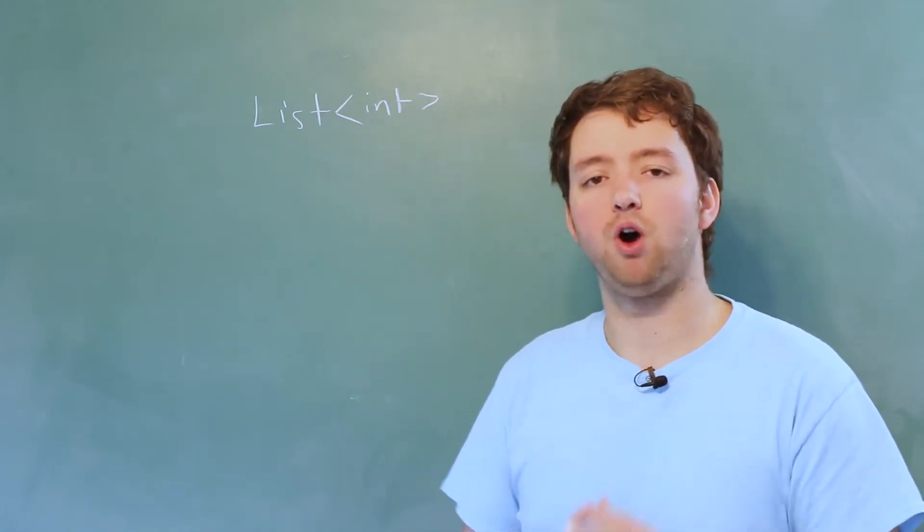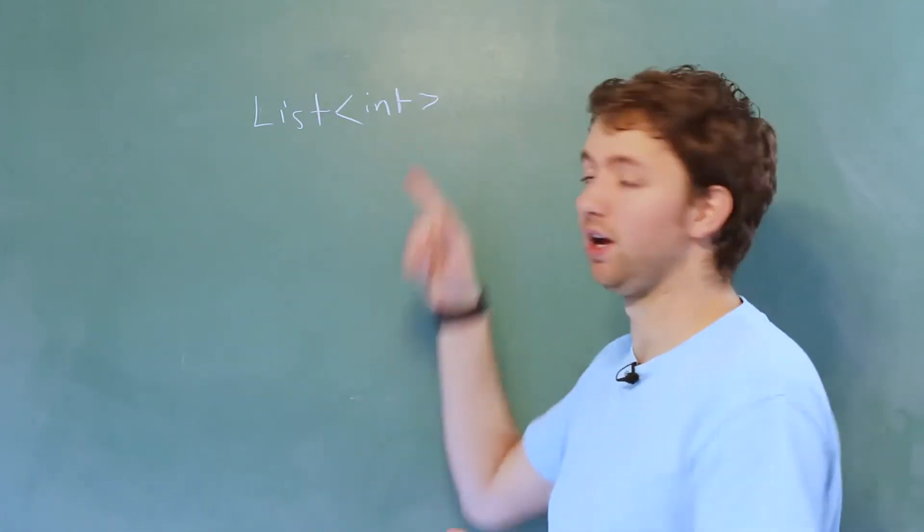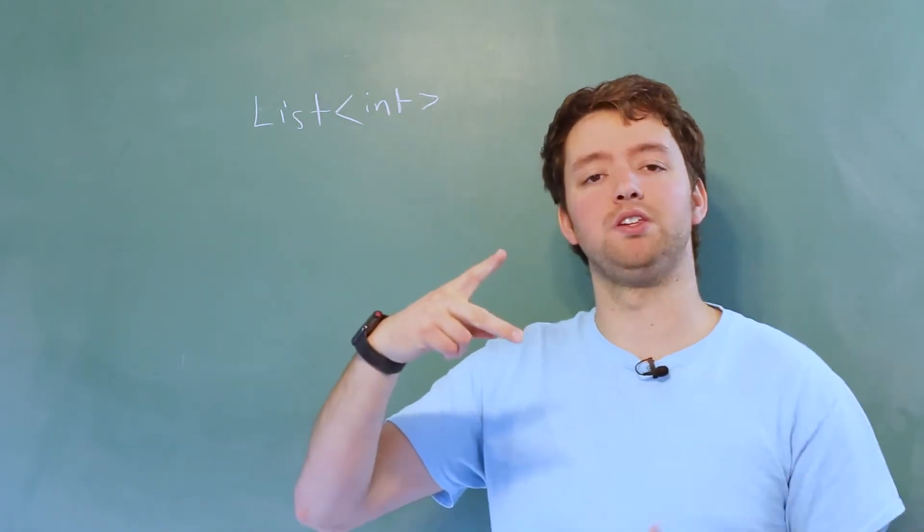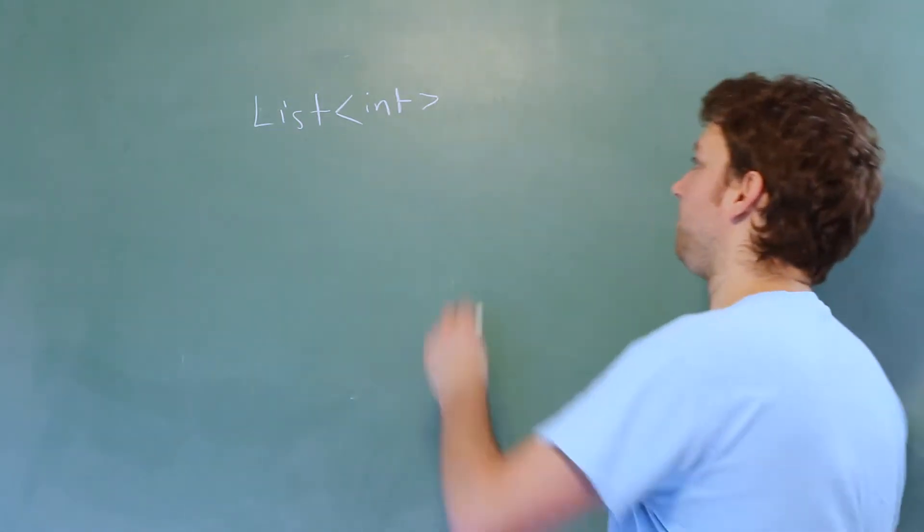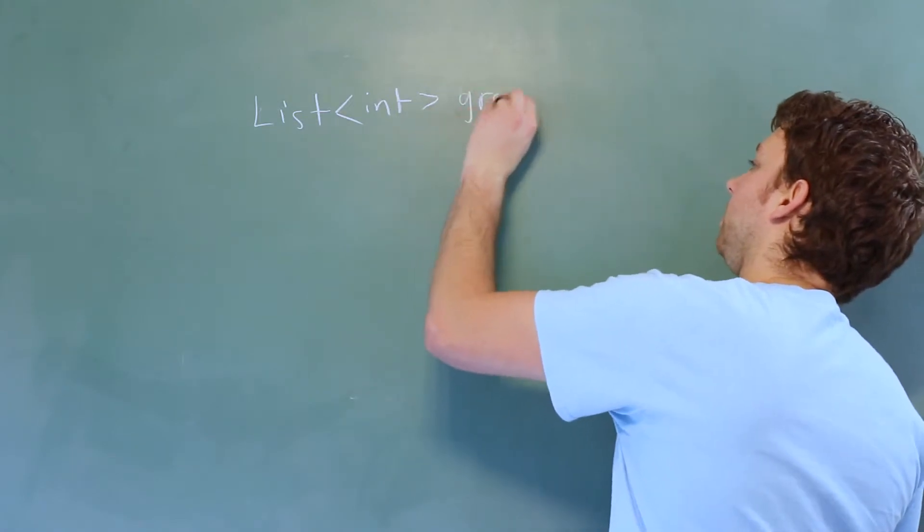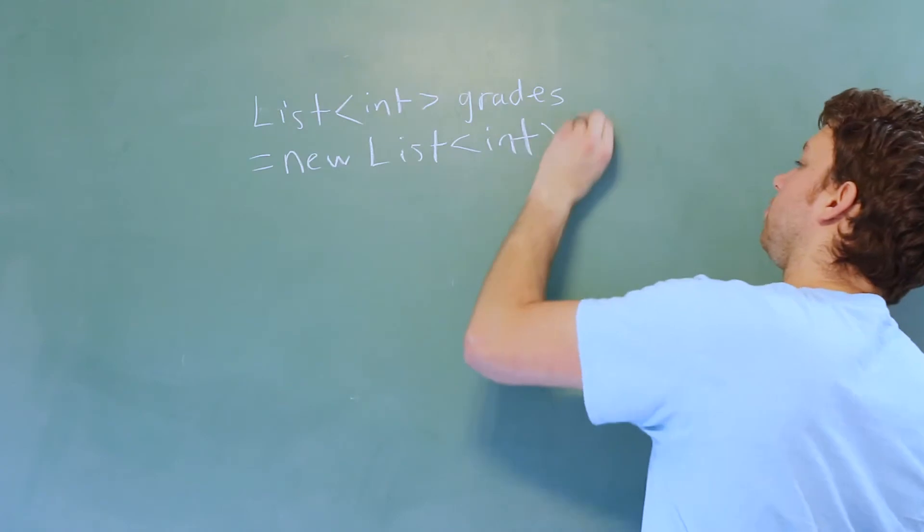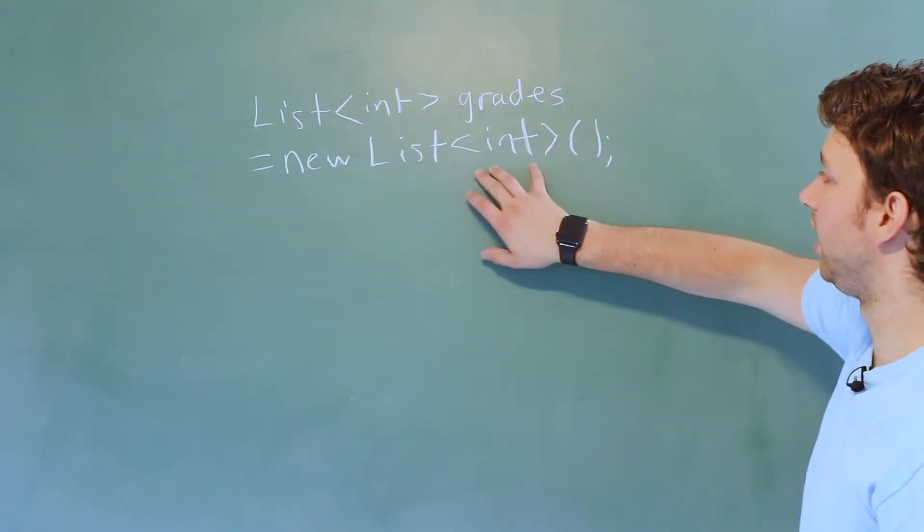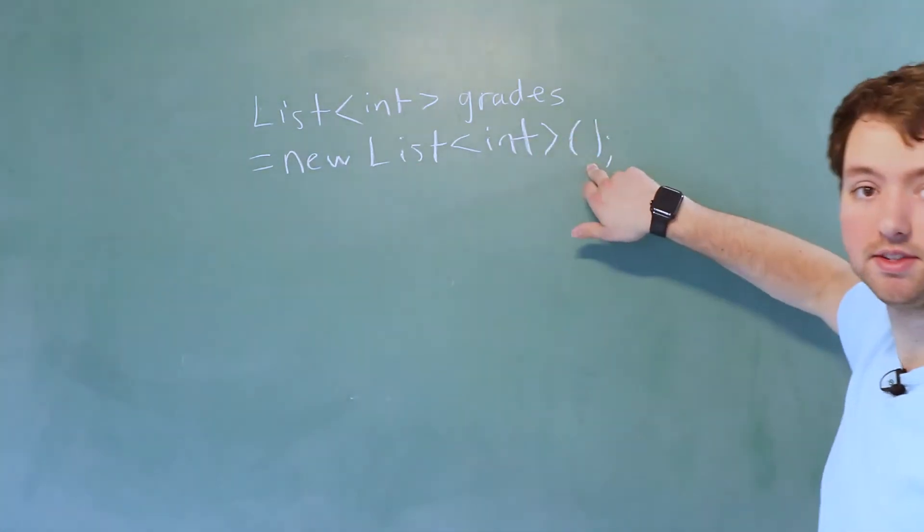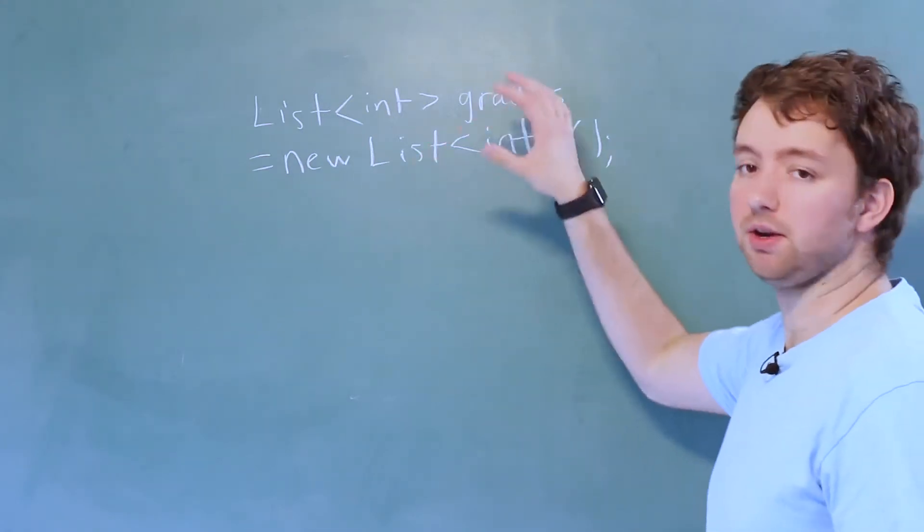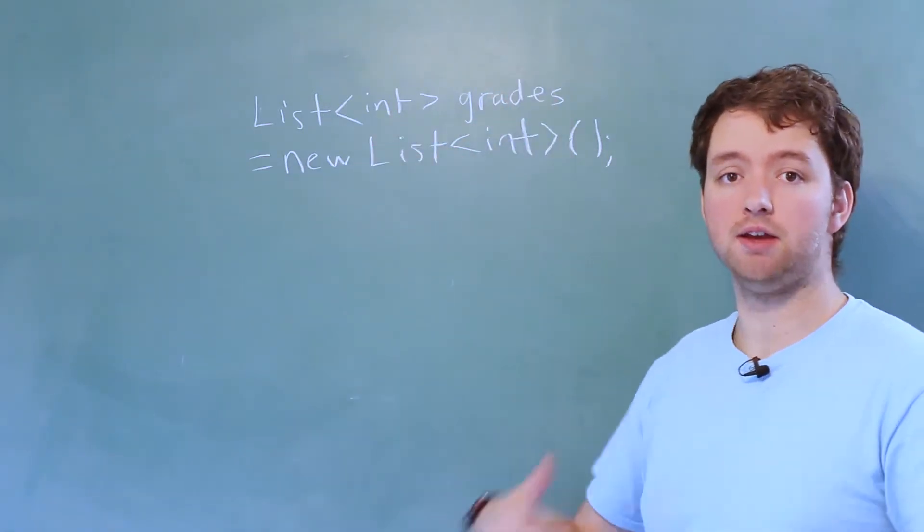But for now, all we need to know is when we see that less than and greater than sign like this, we substitute a type in there, in this case, an integer. Then we can give it a name and assign it a value like so. So we do it again down here and then we use the parentheses. Now notice there's nothing about size here. We don't have to worry about that.